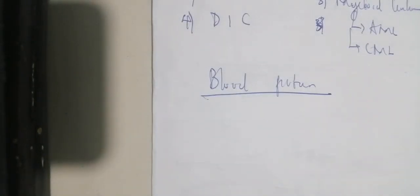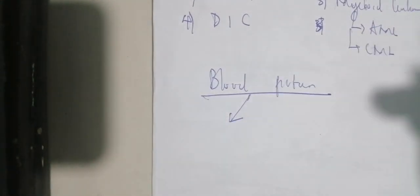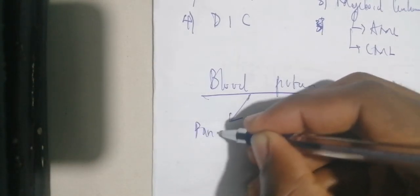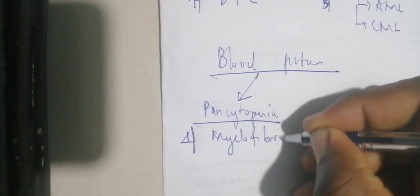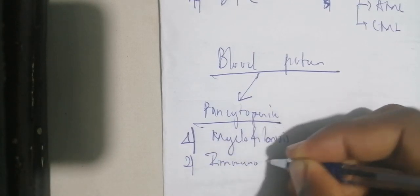Moving on to the blood picture: when you have a low red blood cell count, low white blood cell count, and low thrombocytes — when all of them are low — it is called pancytopenia. There are different causes of pancytopenia. The central causes include myelofibrosis, where the bone marrow becomes fibrosed.